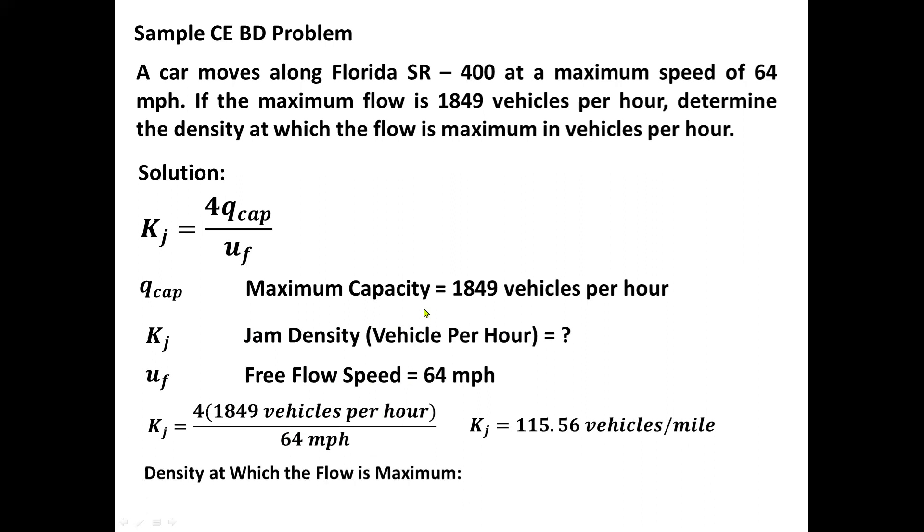Finally, calculating the density at which the flow is maximum, all we have to do is just divide the value of jam density into two. Dividing it into two, we have it as 57.78 vehicles per hour. And this is our final answer, our density at which the flow is maximum in vehicles per hour.